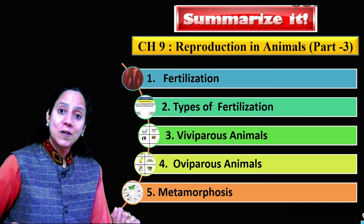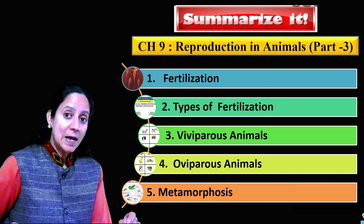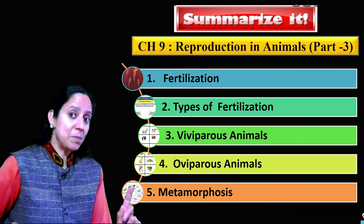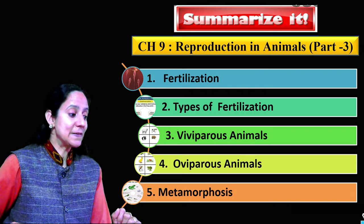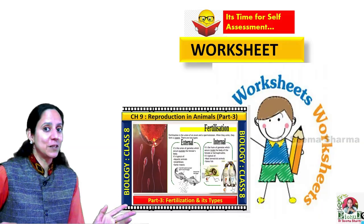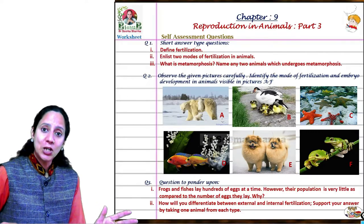Now let's quickly summarize the content of this video. You learned about fertilization and its meaning, the types of fertilization, and when discussing embryo development, you came across two terms: viviparous animals and oviparous animals. Lastly, you learned about metamorphosis. Now it's time for self-assessment with the help of a worksheet I have prepared. I suggest you go through these three questions.